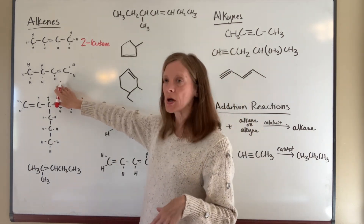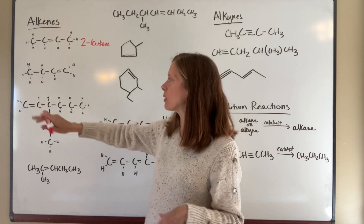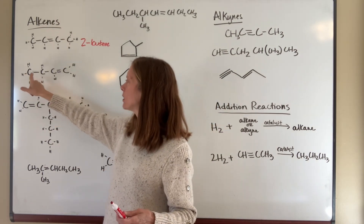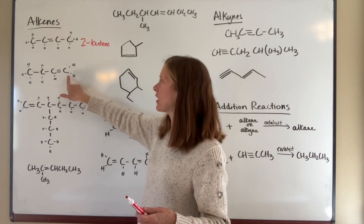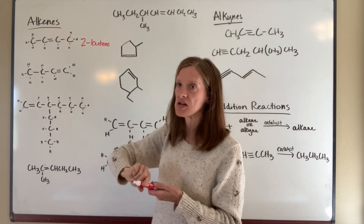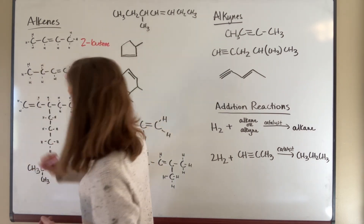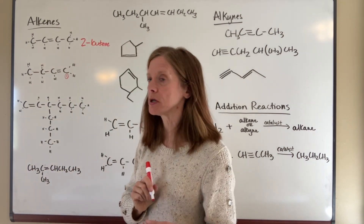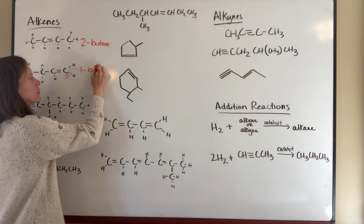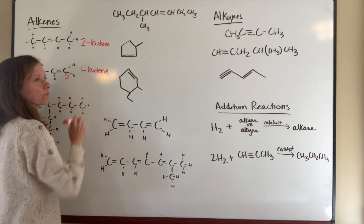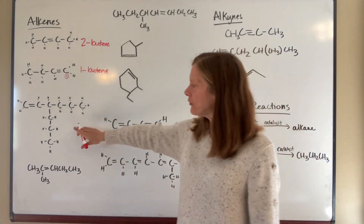For this next example, it does make a difference which end you number from. If you start from one end, the double bond is on the third carbon; if you number from the other end, it's on the number one carbon. So this end has to be number one, making this compound 1-butene.